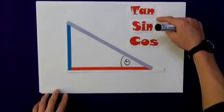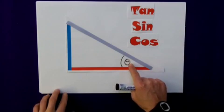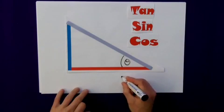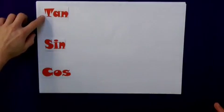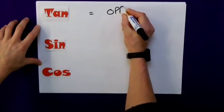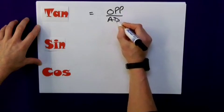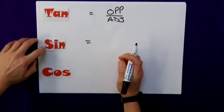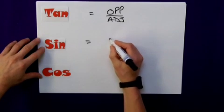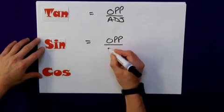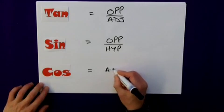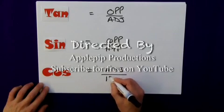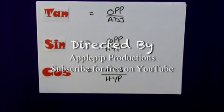So, using each of the ratios in turn, gave me the same answer for theta of 37 degrees. So just as a quick recap then, the tangent ratio was equal to the opposite side over the adjacent side. The sine ratio was equal to the opposite side over the hypotenuse, and the last ratio of cosine was equal to the adjacent side over the hypotenuse. I hope that helps.